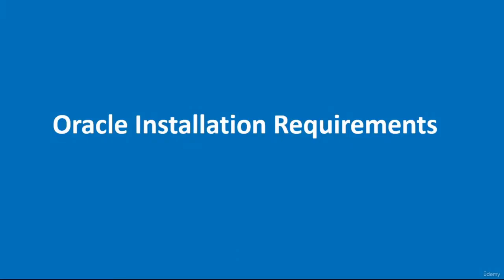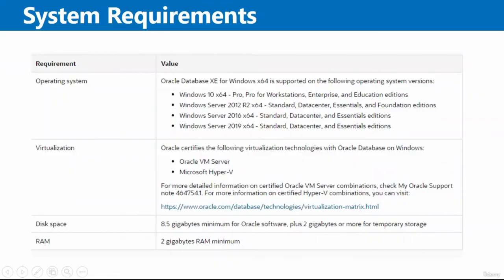In this video, we're going to take a look at the installation requirements to install Oracle on a Windows computer. For the operating system, you need Windows 10 64-bit, Windows Server 2012 R2 64-bit, Windows Server 2016, or Windows Server 2019.